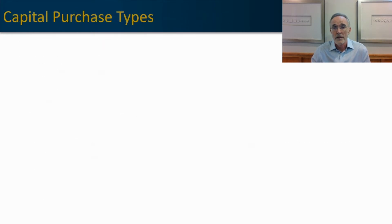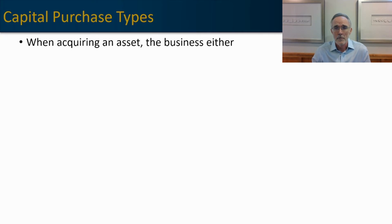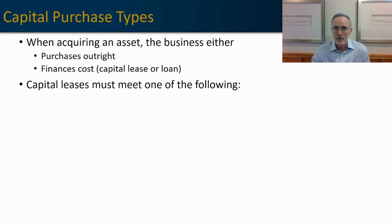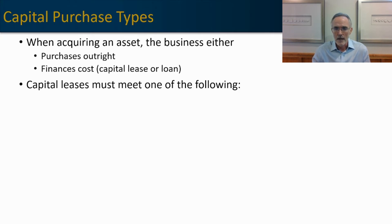There are two main ways companies purchase capital assets. The first is to purchase it outright — write a check for it. But if your organization doesn't have the cash on hand or has better use for it, you might want to finance it. Financing options are typically a capital lease or a loan. Capital leases require some explanation because on the surface they may look like an operating lease, like rent on a building. But when a lease meets one of four criteria, it becomes a capital lease and the item being acquired has to be added as an asset to the organization's books.